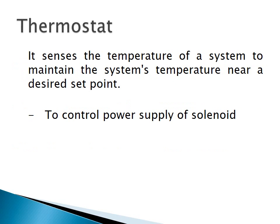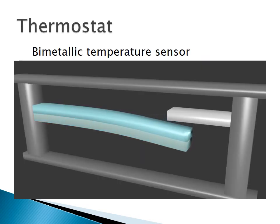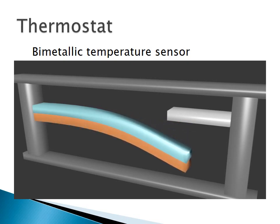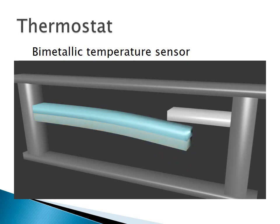A thermostat is a component of a control system that senses the temperature so that it can be maintained around a desired set point. Here we are using a thermostat to control the power supply of a solenoid. A bi-metallic mechanical sensor senses the air temperature using differential expansion of two metals to actuate an on-off switch. Typically the system would be turned on when the temperature drops below the set point and turned off when it rises a few degrees above, to avoid excessive switching.